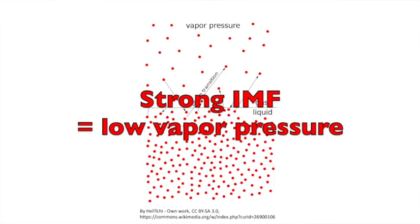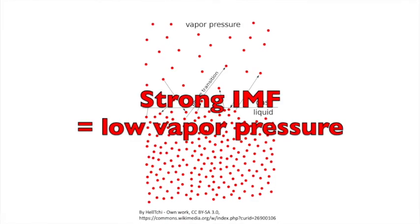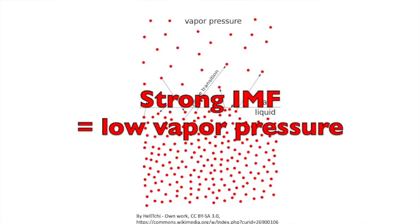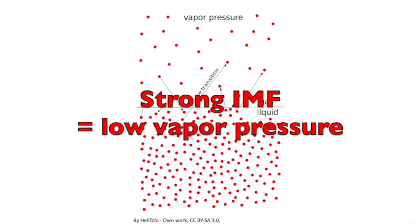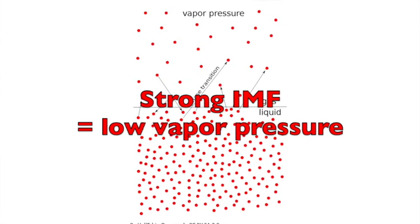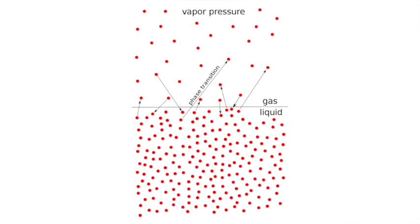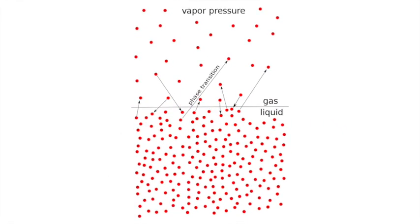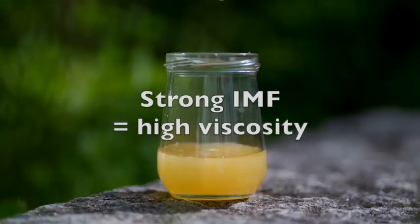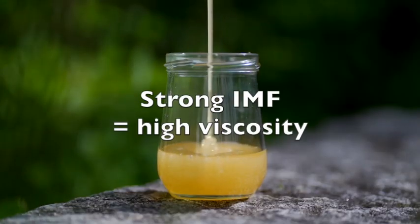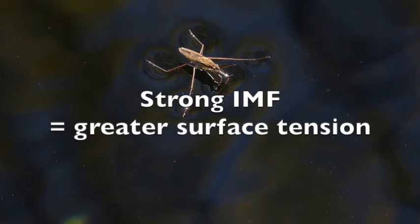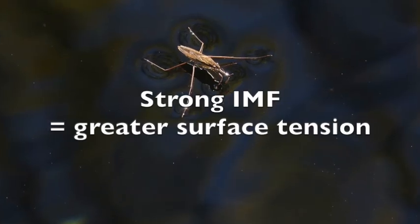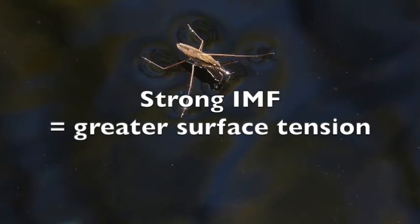The stronger the intermolecular forces are, the lower the vapor pressure is — because it takes a lot more kinetic energy for molecules to break free. The stronger the intermolecular forces, the higher the viscosity and the greater the surface tension.